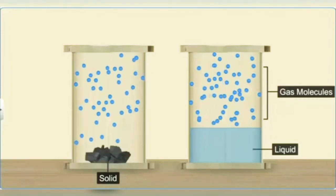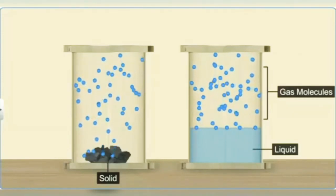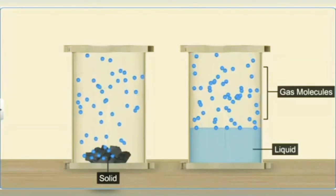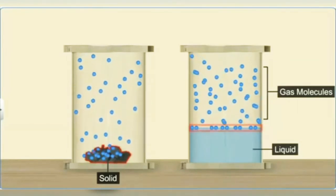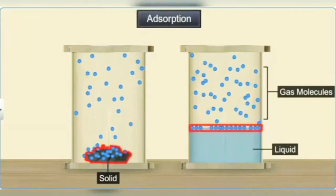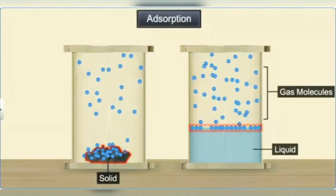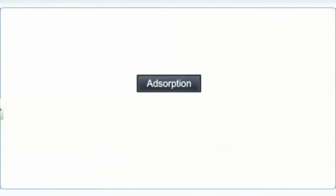Adsorption is the accumulation of molecular species on the surface of a solid or liquid, resulting in a high concentration of molecules on the surface. Adsorption of gases on solid can be divided into two types: physical adsorption and chemical adsorption.